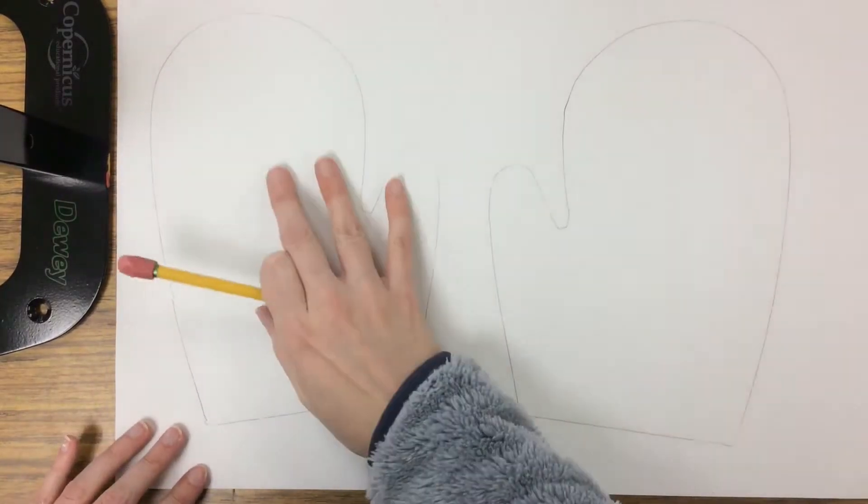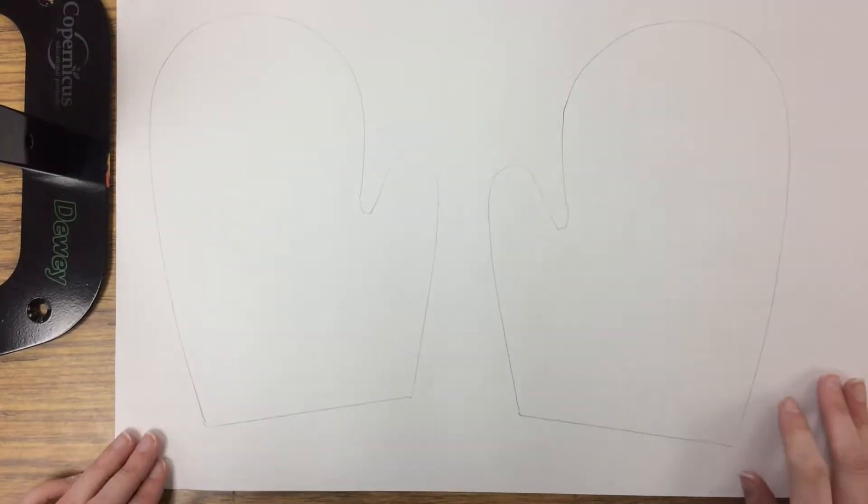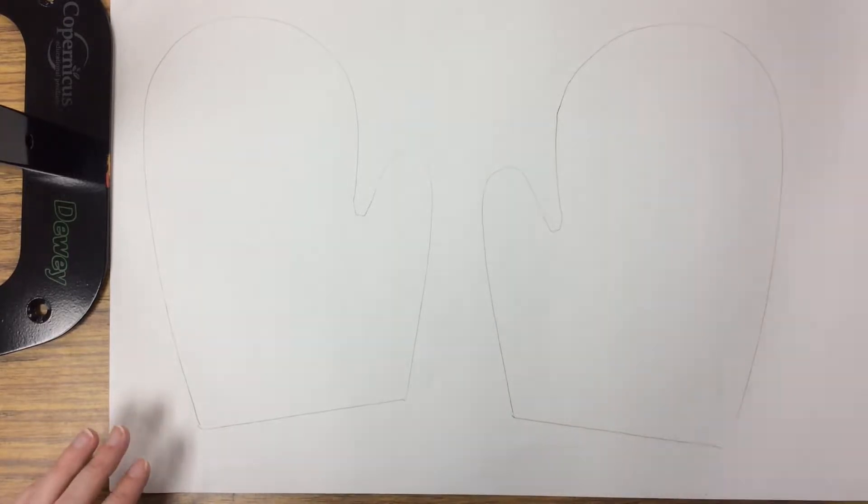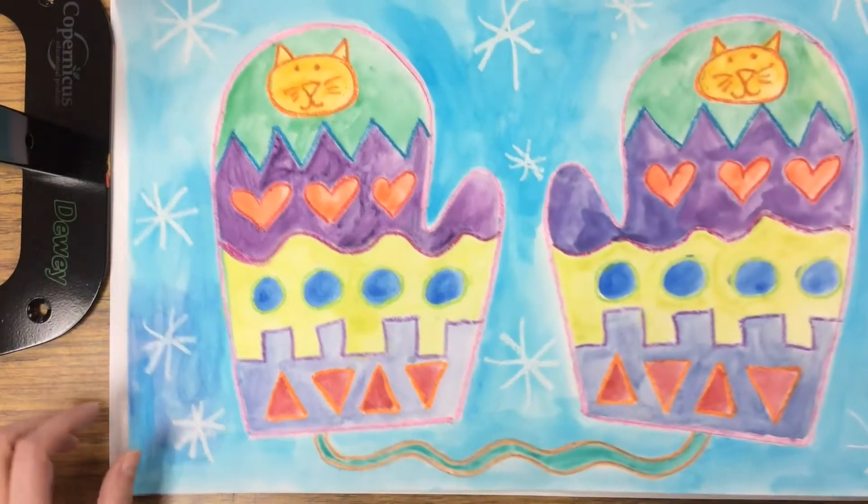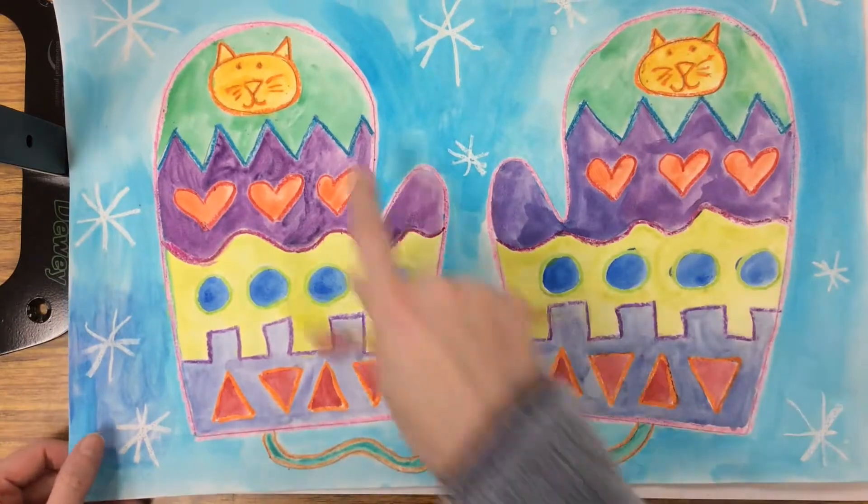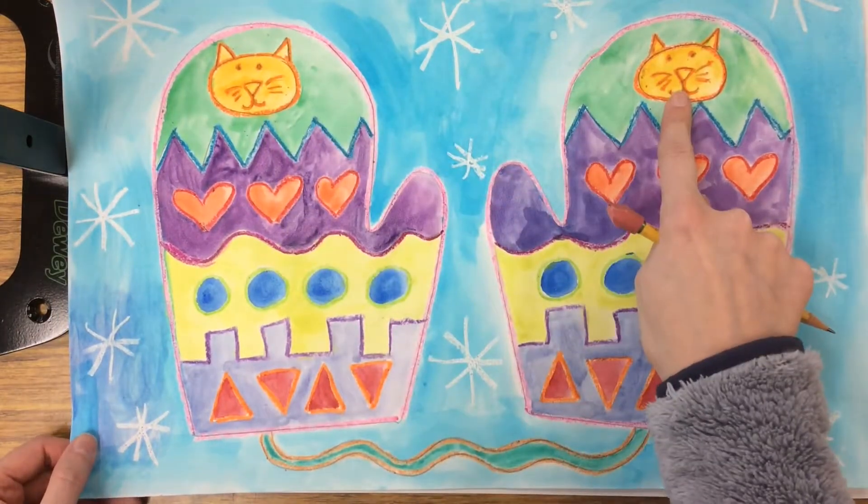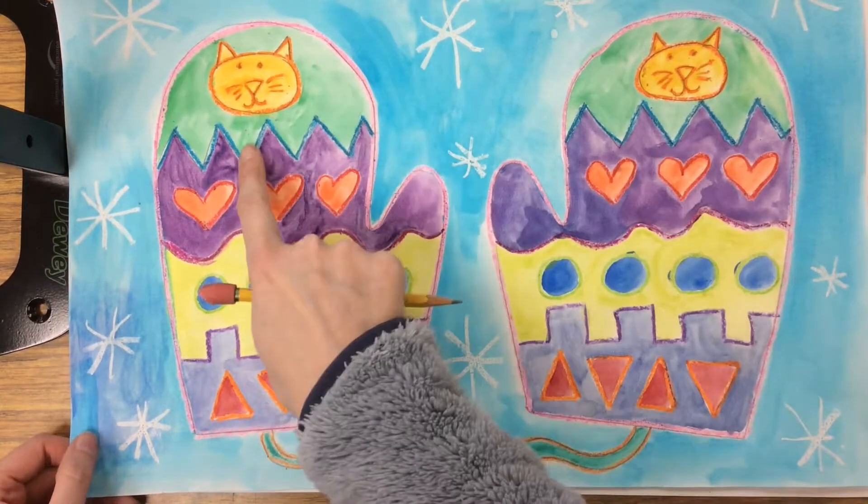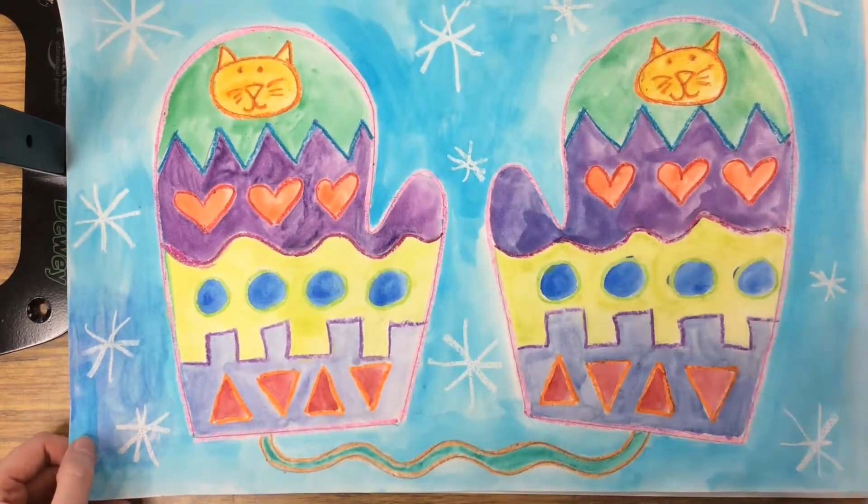So now I have a left and a right. To make them symmetrical, it means I want to design them the same on both sides. I made a cat on the left, so I made a cat on the right, zigzag on the left, zigzag on the right.